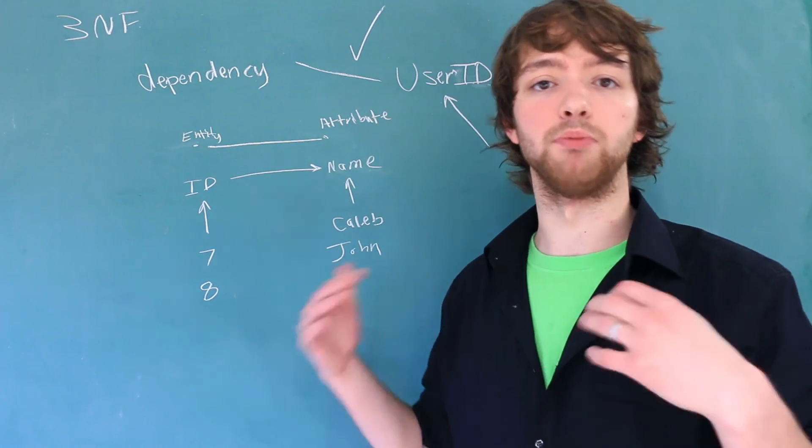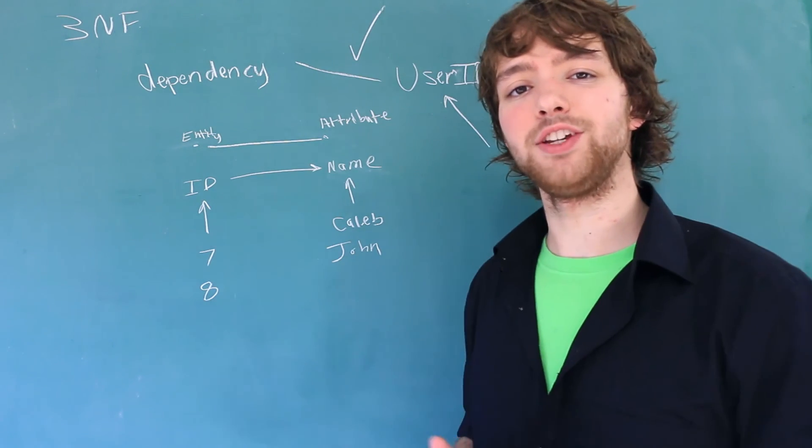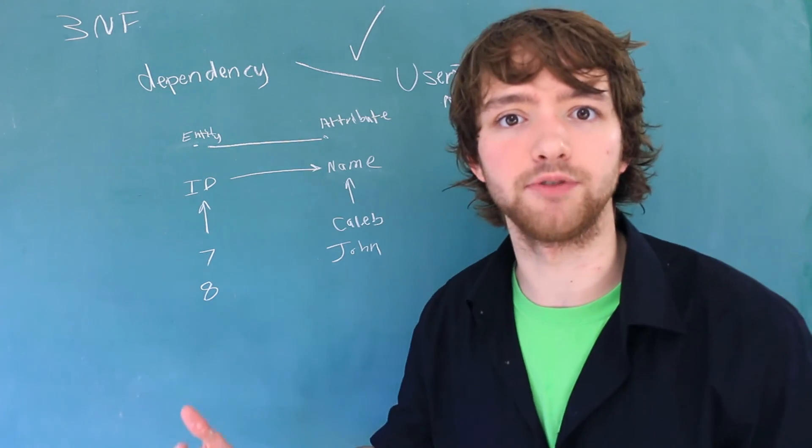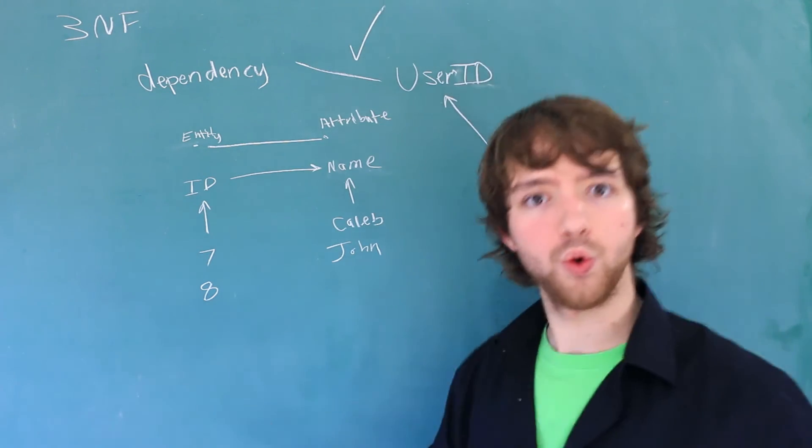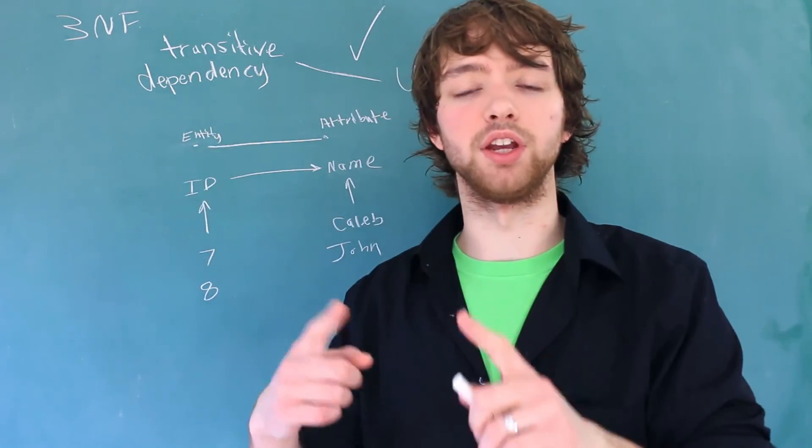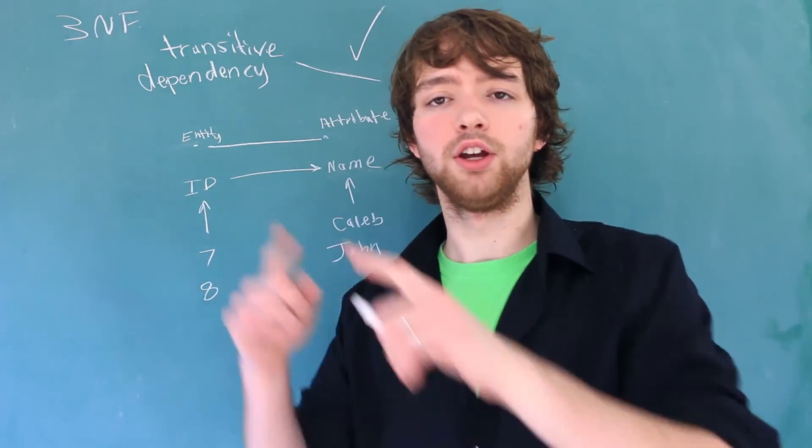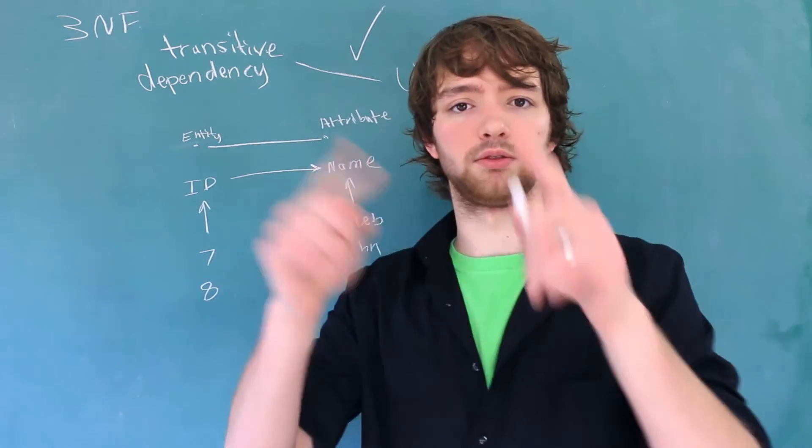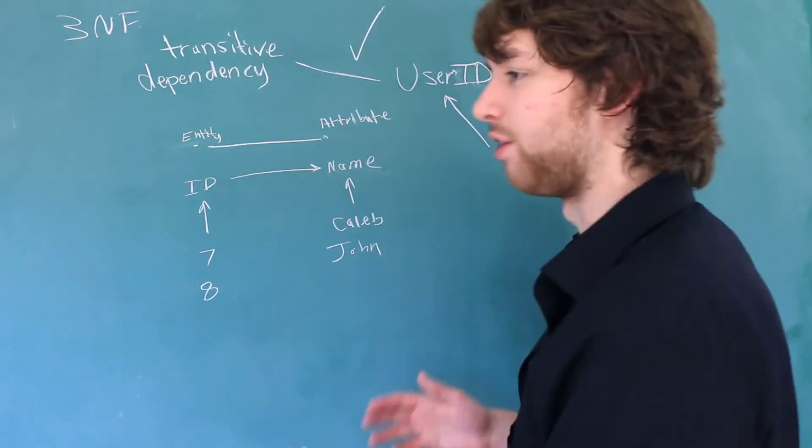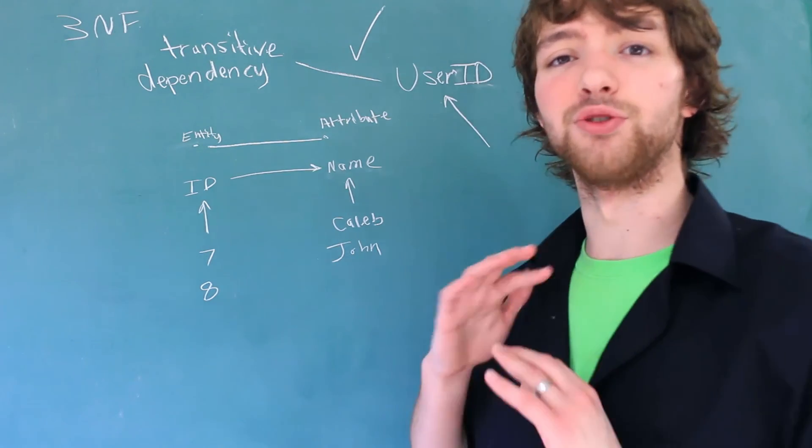For example, in the last video we talked about partial dependencies. Well in this video we are going to discuss a type of dependency known as a transitive dependency. A transitive dependency is when something depends on something which depends on the primary key. So you get this bouncing kind of arrow thing. So I know that made no sense at all. So the easiest way to explain this is just to go through an example.